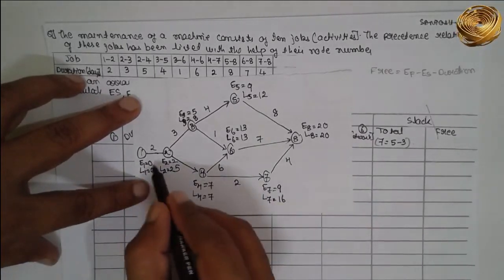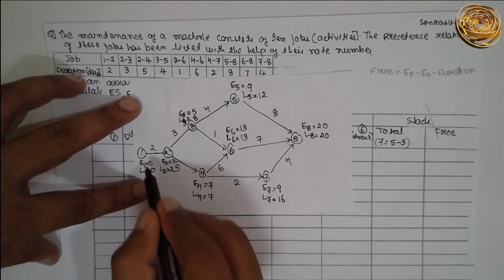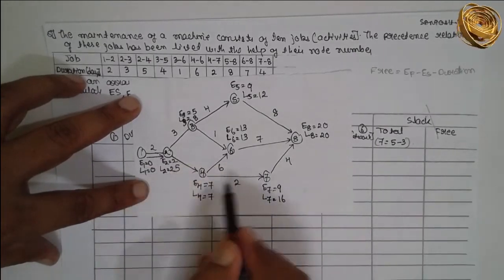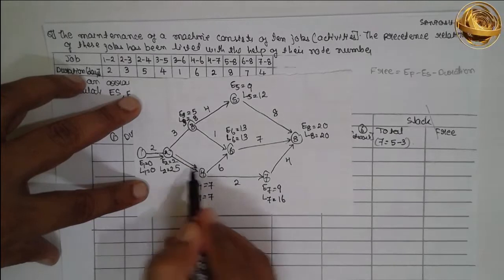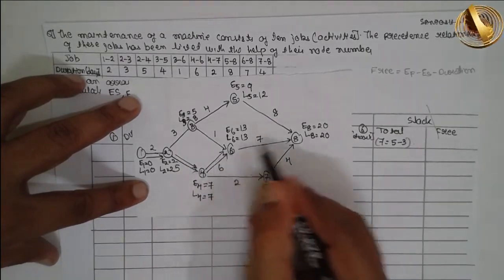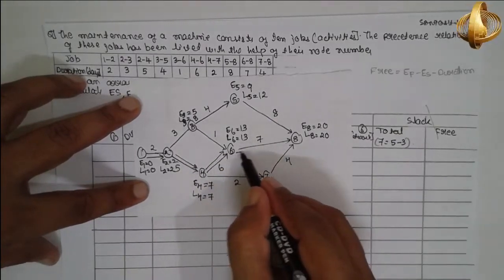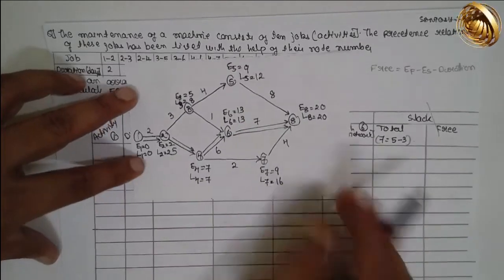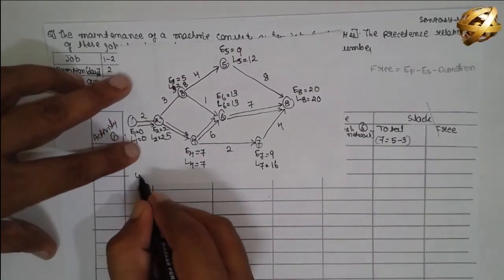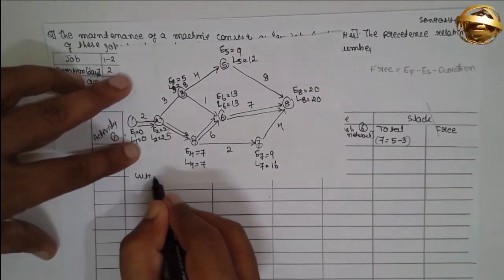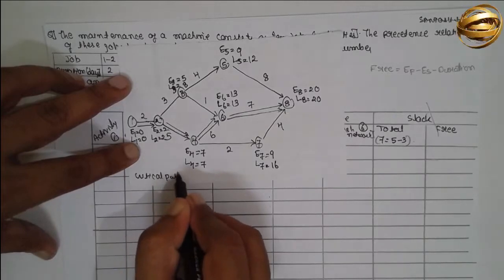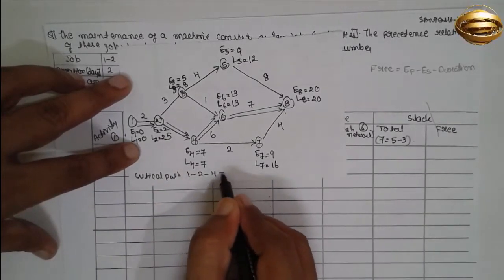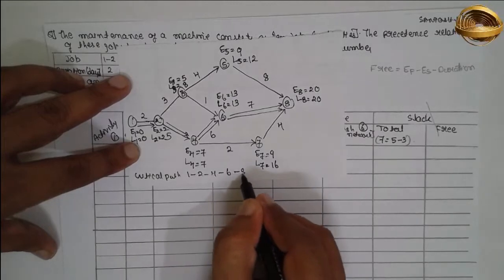Now see the critical path. Where E equals L: node 1 (0,0), node 2 (2,2), node 4 (7,7), node 6 (13,13). So the critical path is 1 → 2 → 4 → 6 → 8.